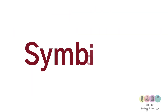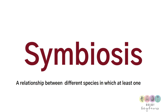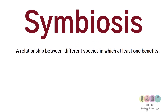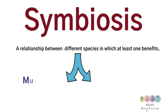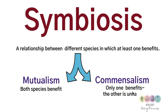Symbiosis is defined as a relationship between different species in which at least one benefits. It can be further broken down into mutualism — where both species benefit — and commensalism — where only one benefits but it doesn't harm the other.